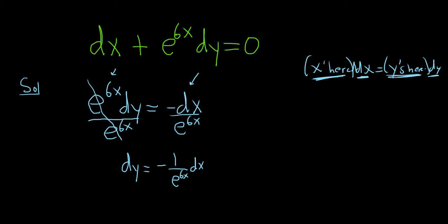So we've pretty much accomplished our goal. We have all of the y's on one side, in this case it's just a 1 here, and all of the x's on one side together with the dx. Now what we do is we simply integrate both sides.